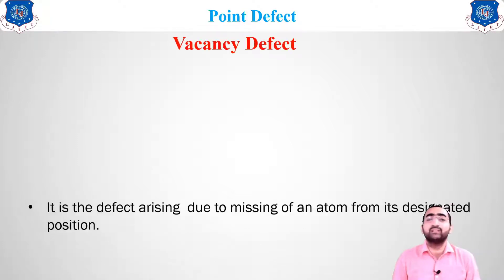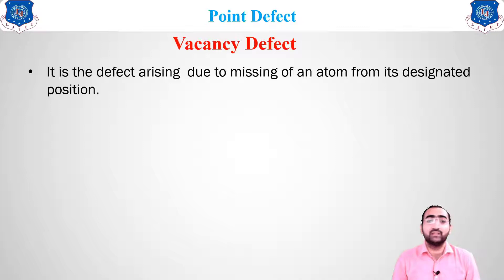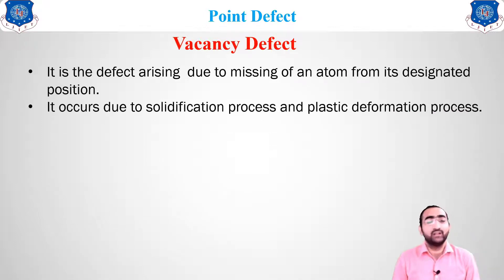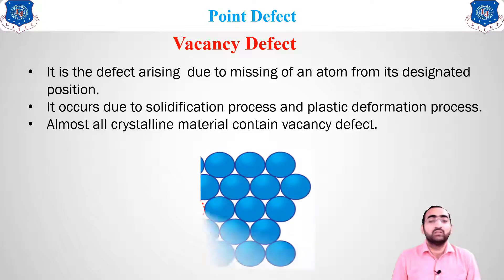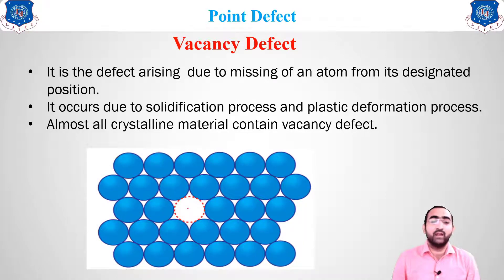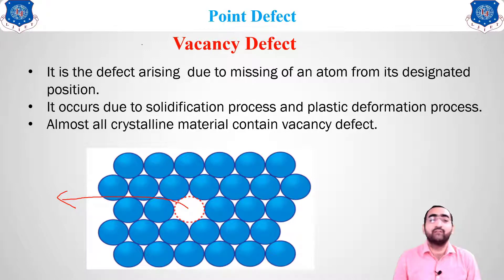Starting with the first one — vacancy defect. When a single atom leaves its position and goes away, the defect generated inside the crystal is known as a vacancy defect. It occurs due to the solidification process or the plastic deformation process. Almost all crystalline materials have some vacancy defect present. One atom has gone away from its original site, leaving a hole or vacant space — that is why it is known as a vacancy defect.